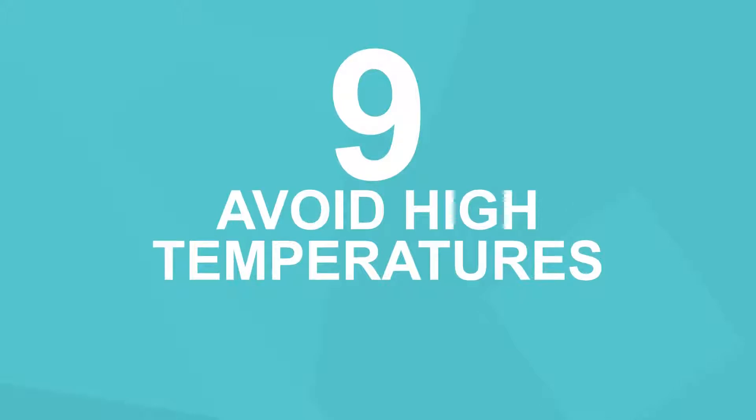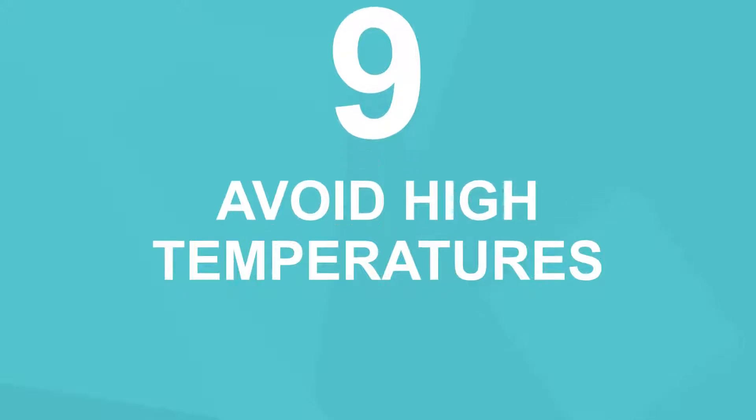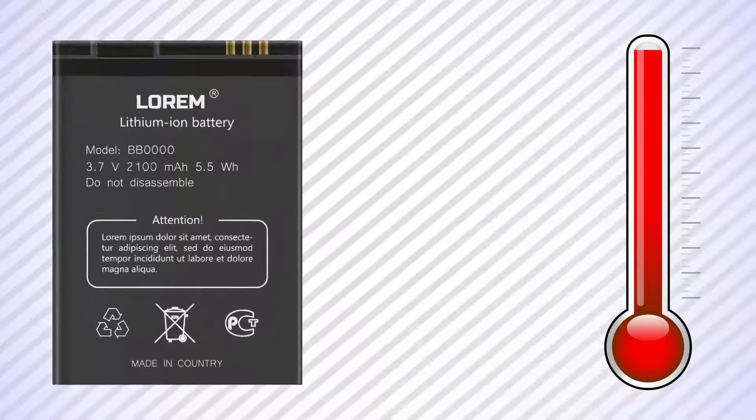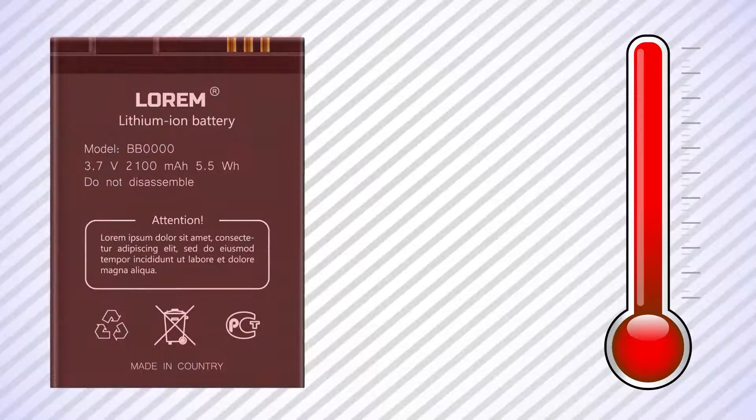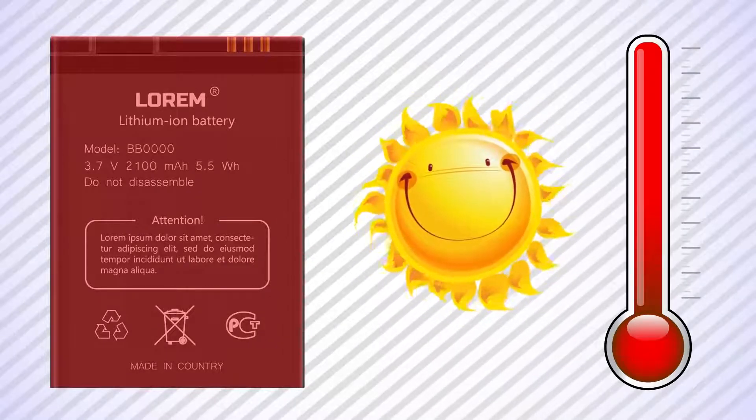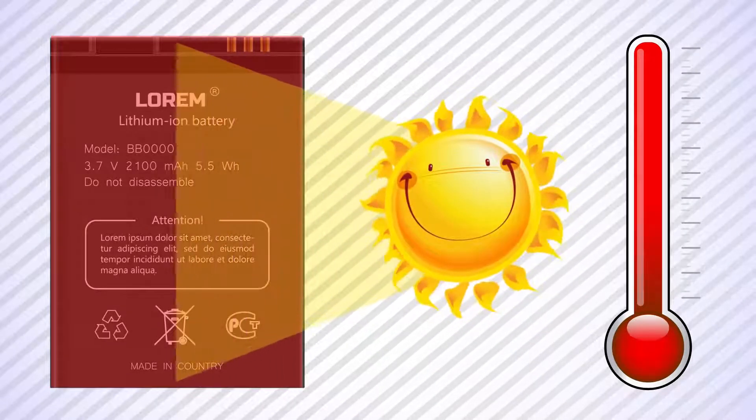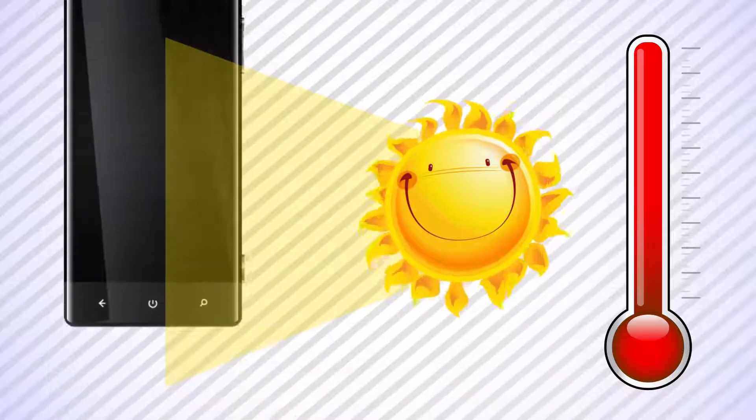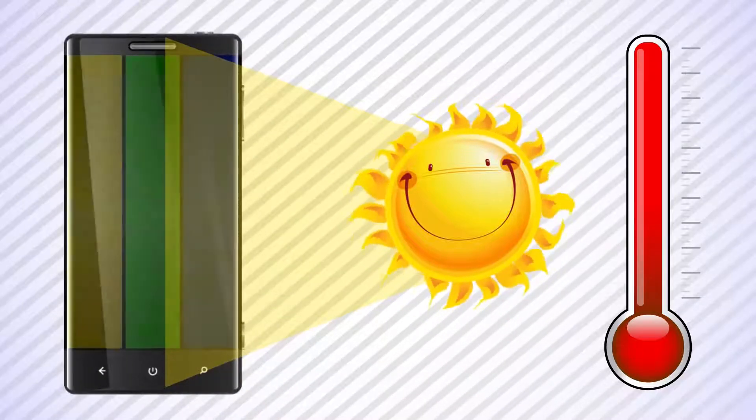Number 9. Avoid high temperatures. A high temperature is the worst thing you can imagine for lithium-ion batteries. They totally can't stand overheating. That's why you should never expose them to direct sunlight or put them near heat sources. Modern cell phones have very high-quality screens, but even they can't stand direct sunshine.